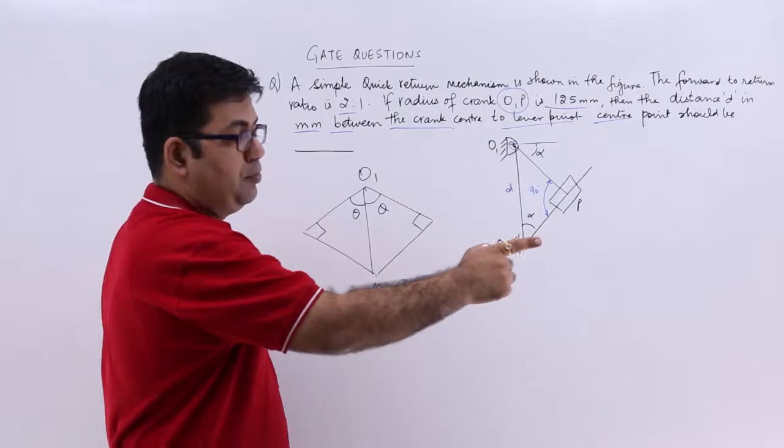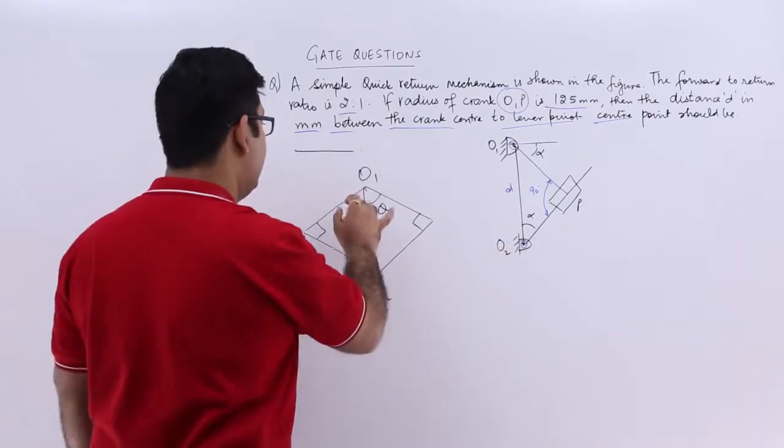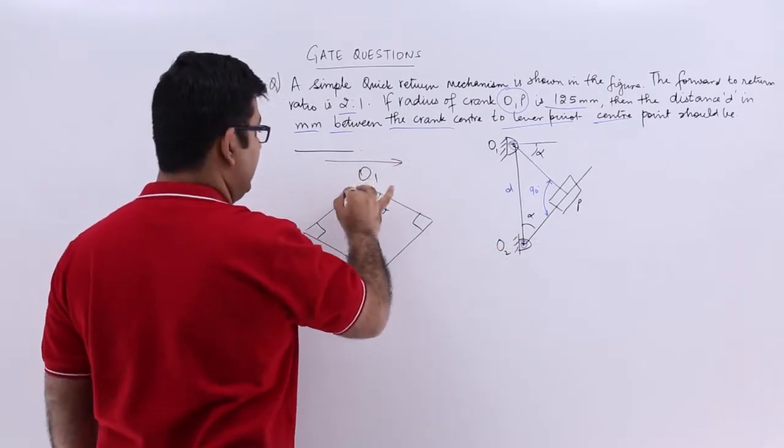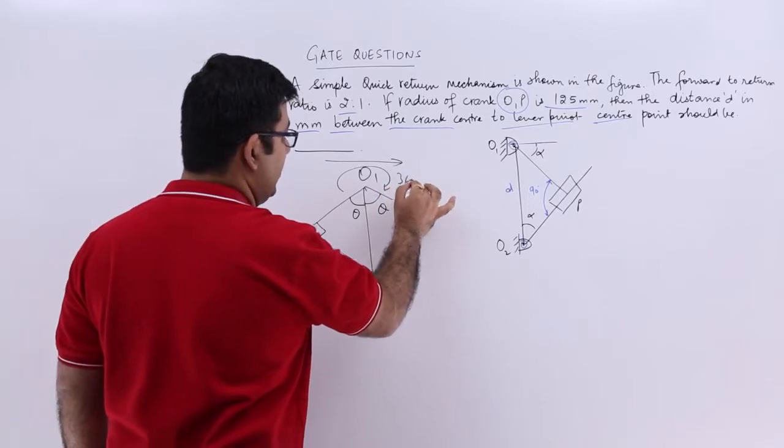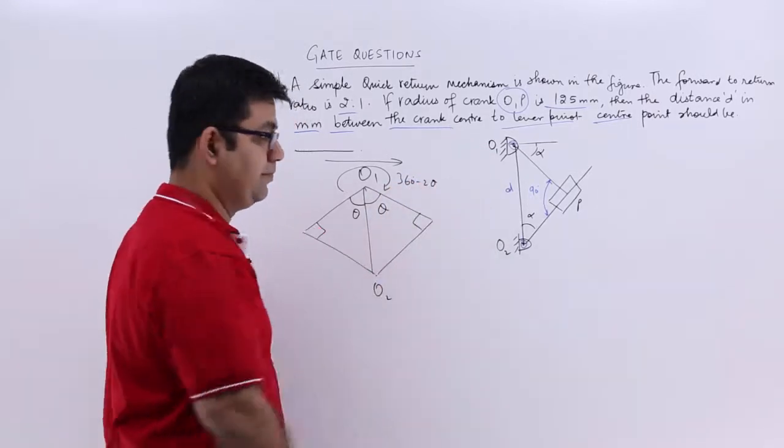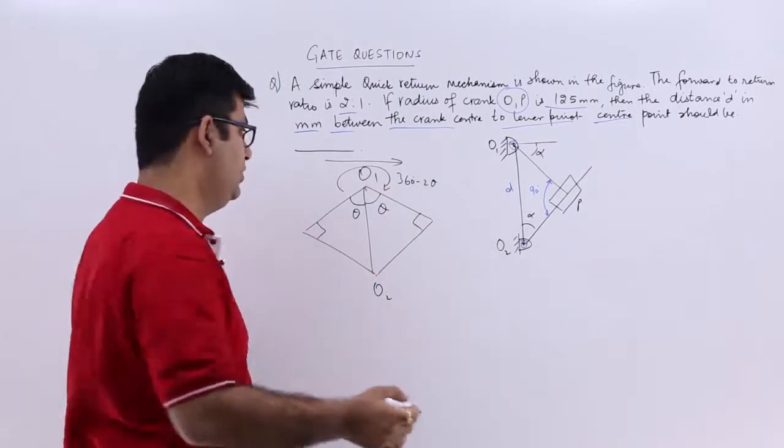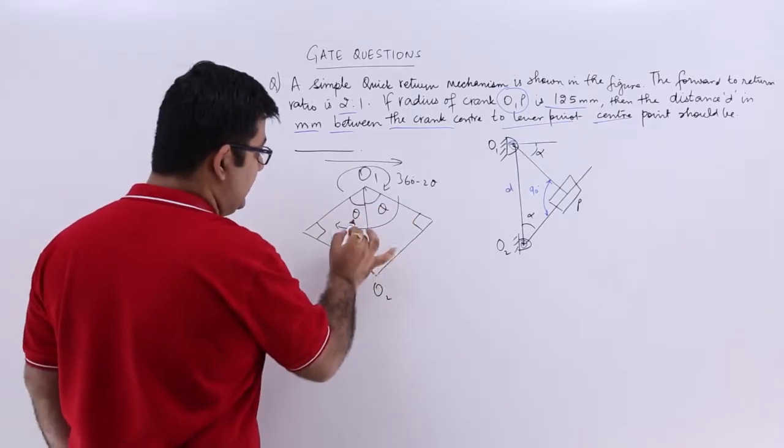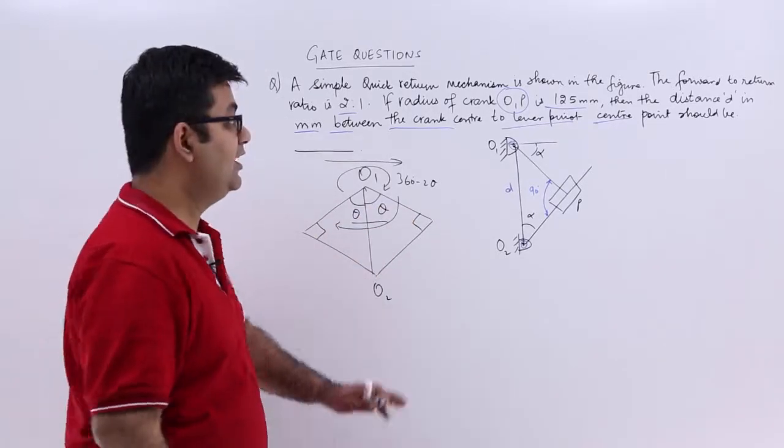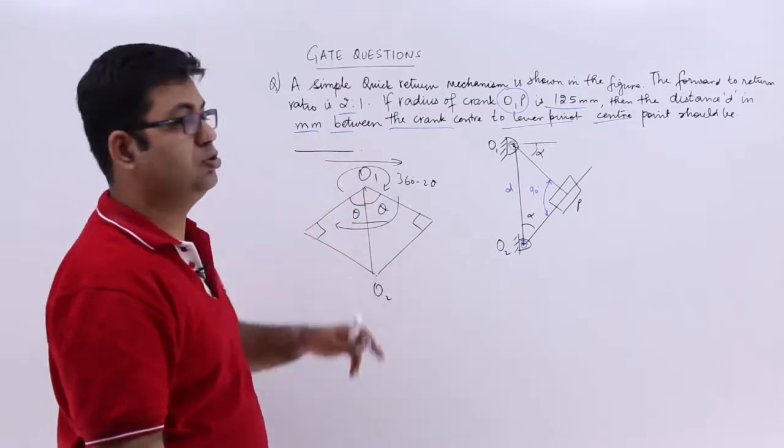So when the motion is in the forward direction like this, then the angle turned is 360 minus 2 theta. During the return motion, which is in this direction, the angle turned is 2 theta and the ratio forward to return is 2 is to 1.